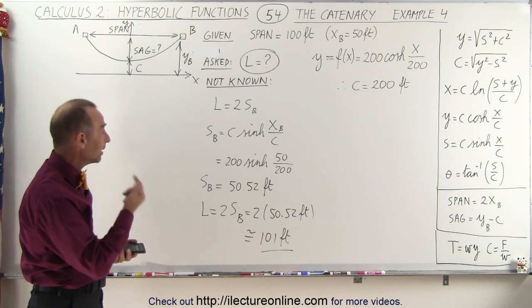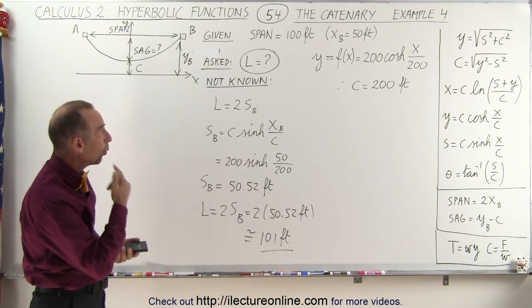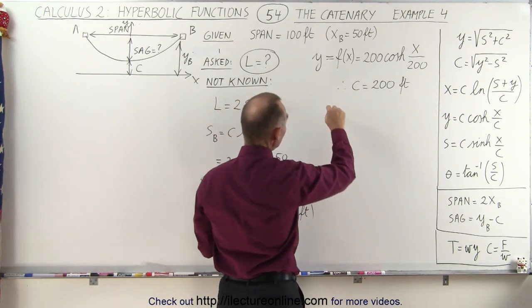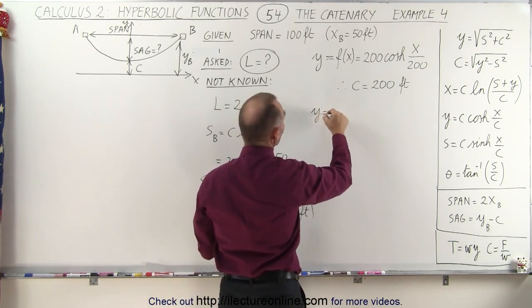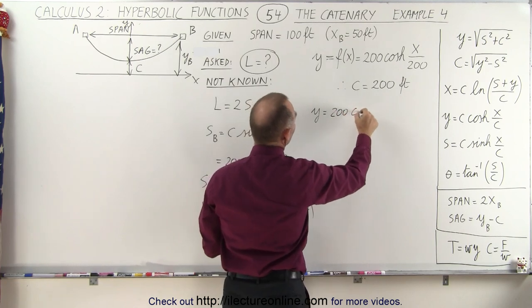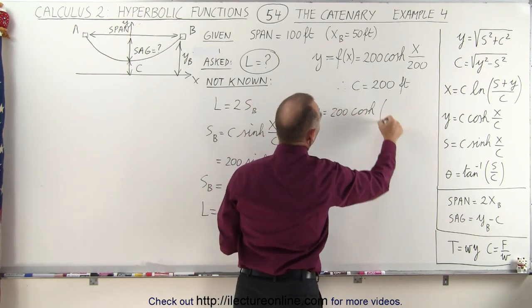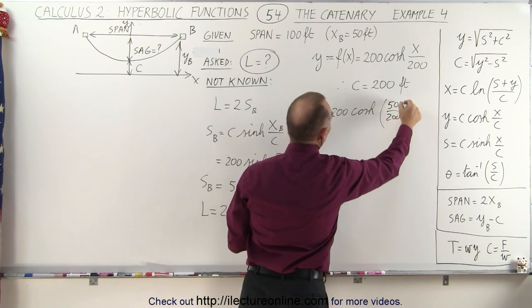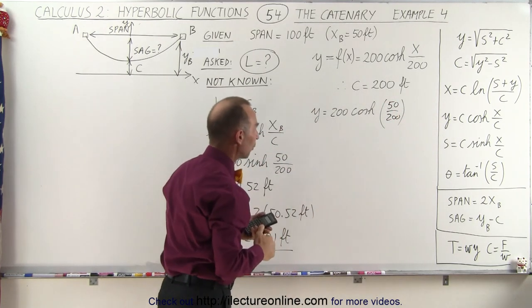Now, could we find a sag? Well, to do that, we need to find y, and so we'd have to solve for y here. And so we have y is equal to 200 times the hyperbolic cosine of x would be 50 over 200.